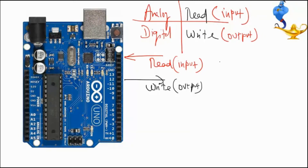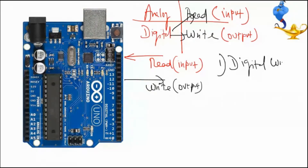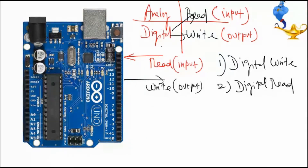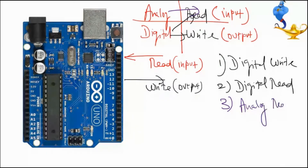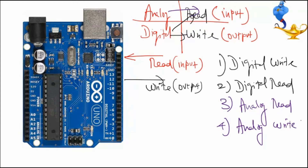Let me start with digital. The first operation is digital write, the second is digital read, and the third is analog read. These are the four possible combinations that this Arduino can perform.